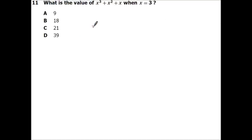Alright, what is the value of x cubed plus x squared plus x when x equals 3? So I want 3 cubed plus 3 squared plus 3. So this is 27 plus 9 plus 3, which is going to give you 39.